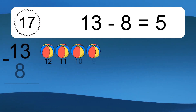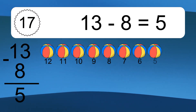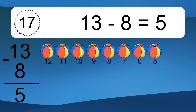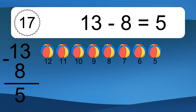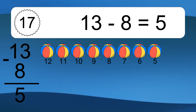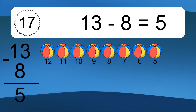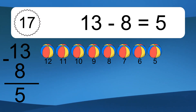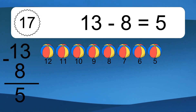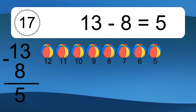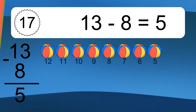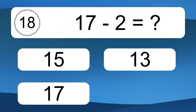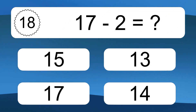13 minus 8 equals what? 13 minus 8 equals 5. Let's count it: 12, 11, 10, 9, 8, 7, 6, 5.